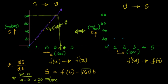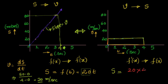Now for integration: we want to calculate the distance covered in 4 seconds, knowing only that velocity is constant at 20 m/s. At t = 1, 2, 3, 4 the velocity is 20. The distance covered in 4 seconds is the area of the graph between t = 0 and t = 4, which is 20 × 4 = 80 meters. This is integration — knowing the velocity and going back to the distance.